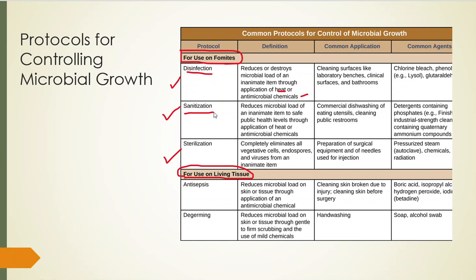Sanitation reduces the microbial load to meet safe public health standards, again using heat or chemicals. Examples include commercial dishwashing in restaurants and cleaning public restrooms. These use detergents with phosphates or quaternary ammonium compounds, which we'll discuss shortly.